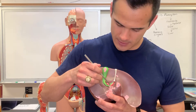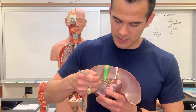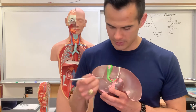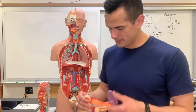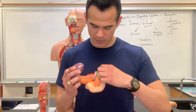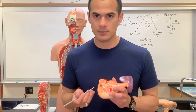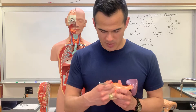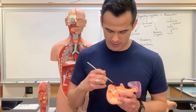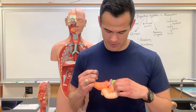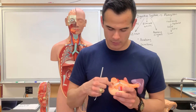The cystic duct and the common hepatic duct merge at a point known as the common bile duct. The common bile duct goes all the way down through the back side of the pancreas and empties into the duodenum. So we have two different secretions: pancreatic juice coming in to neutralize the stomach acid, and bile also entering the duodenum.